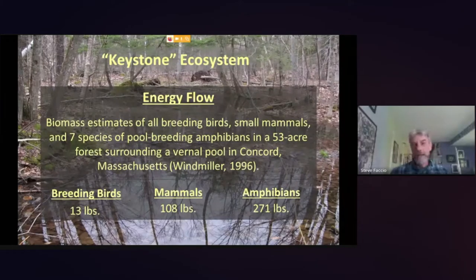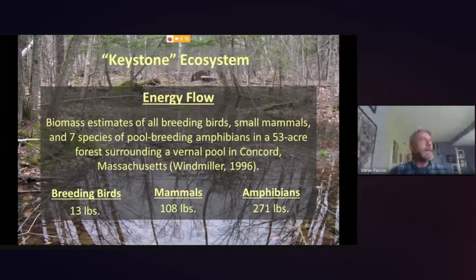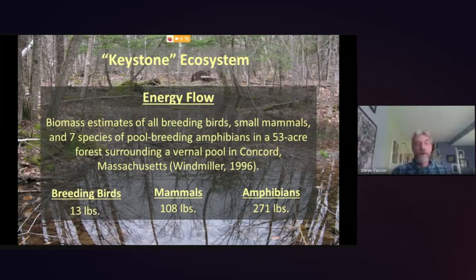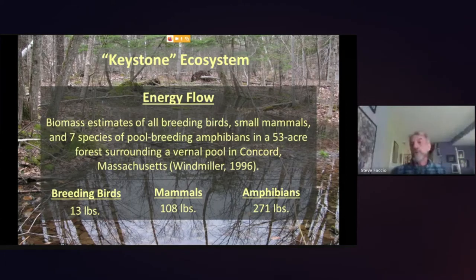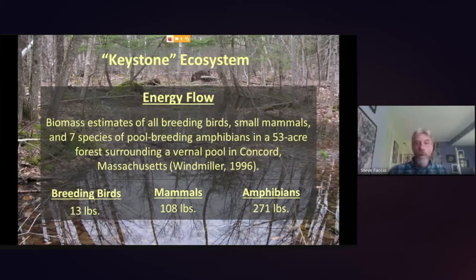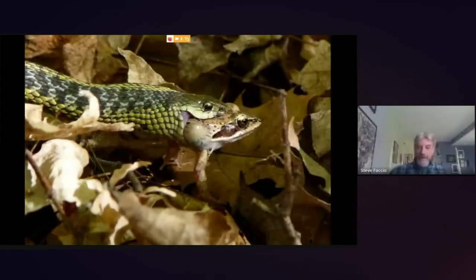The amphibians amounted to 271 pounds — more than the small mammals and birds combined — coming out of that single vernal pool. That massive transfer of energy from the aquatic system to the surrounding terrestrial forest at the end of summer, when all those baby frogs and salamanders leave the pool, provides a huge amount of prey for a wide variety of animals.